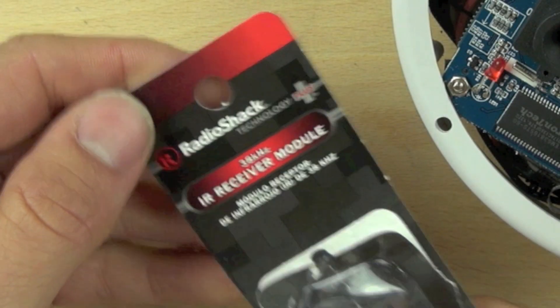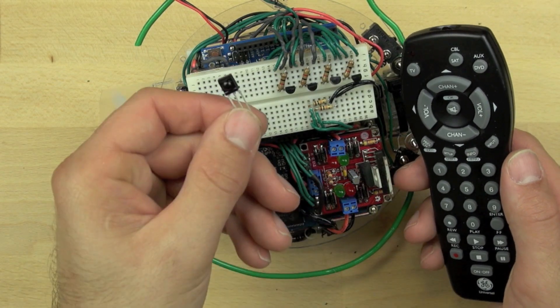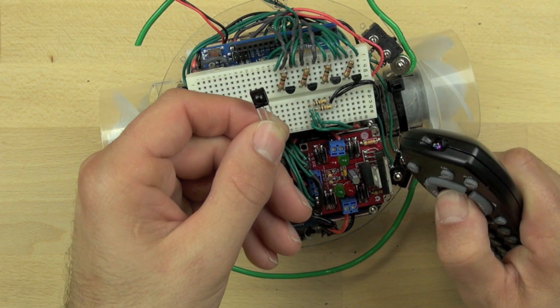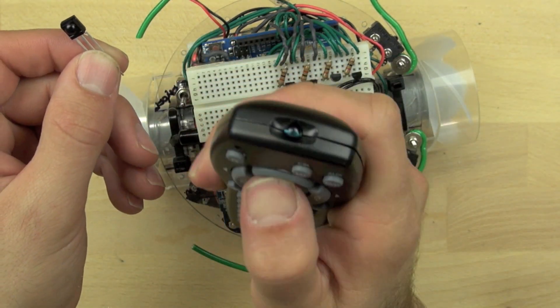This is our 38 kHz IR receiver module, and it works with our universal remote that you can see here. You can see it lighting up as we push different buttons.